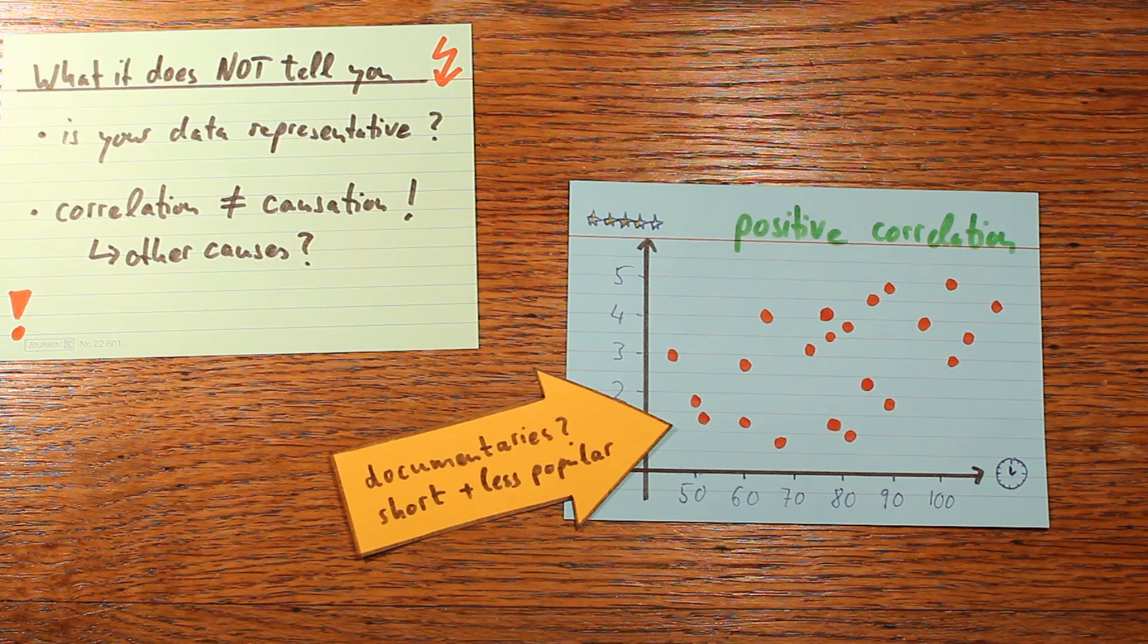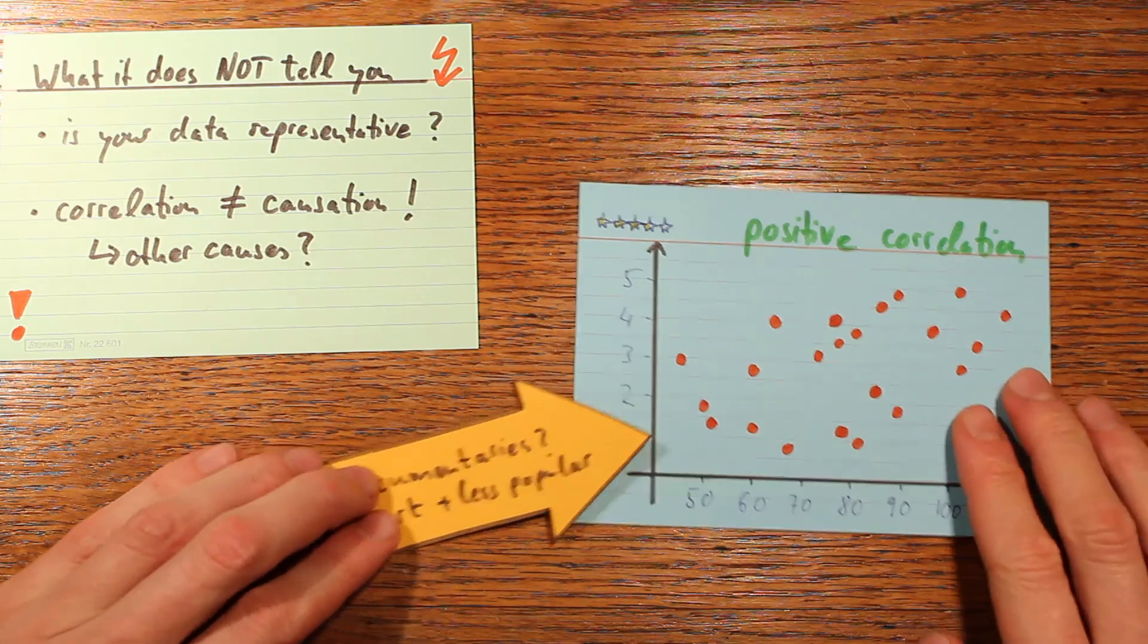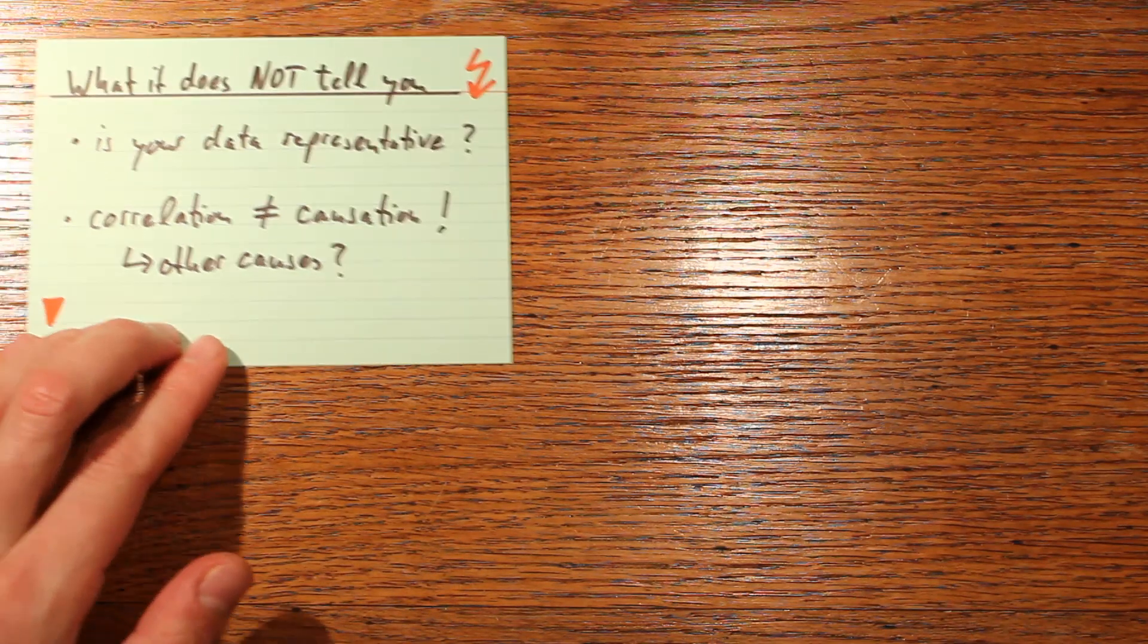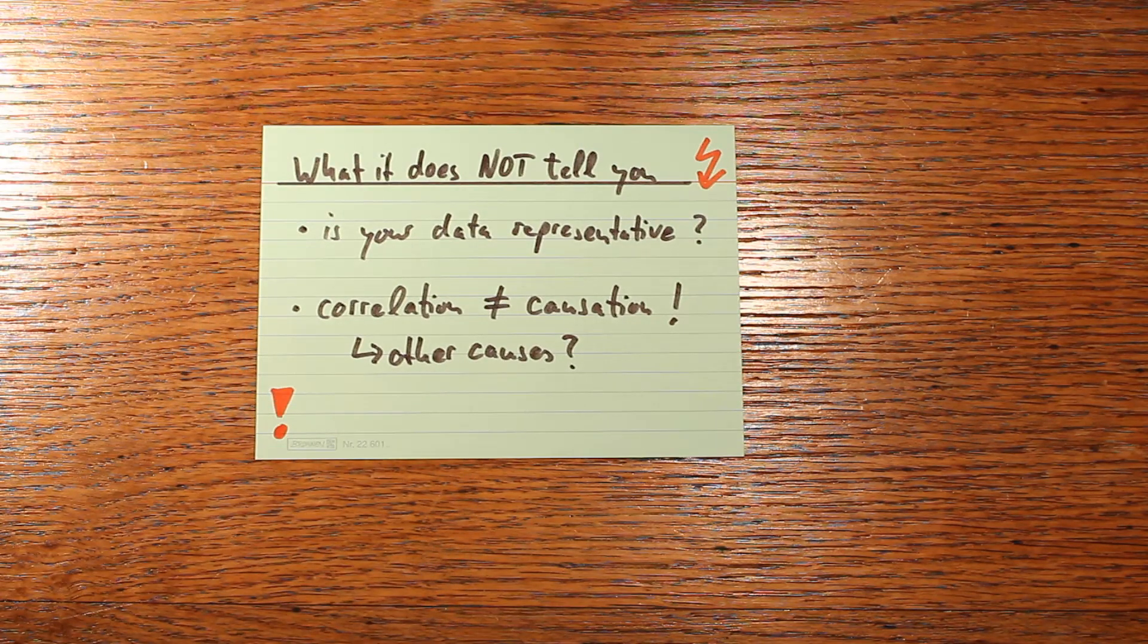There could be all kinds of reasons why you see this correlation, but the correlation coefficient itself really just tells you that in your dataset two things, like movie length and rating, coincide. But it's not telling you anything about what causes this coincidence.